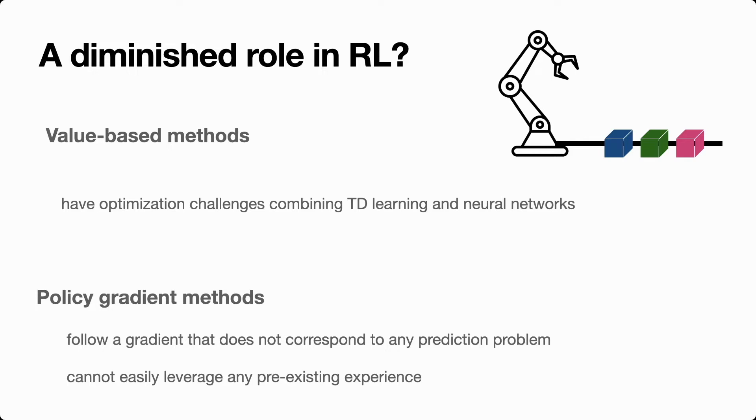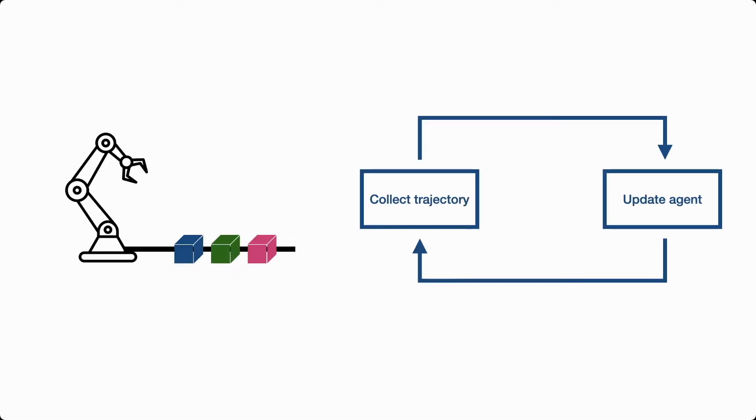While we certainly can and have combined these methods with neural networks, there's a lot of room for improvement. One way to potentially realize this improvement is to have an RL algorithm that's able to better leverage this workhorse of supervised learning. How can we actually go about doing that, making the RL problem look more like supervised learning?